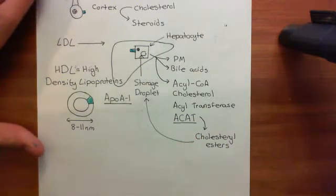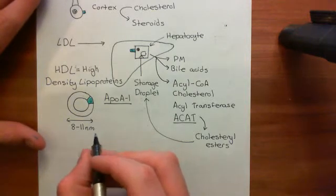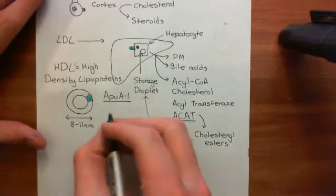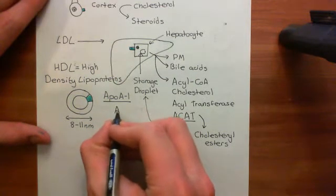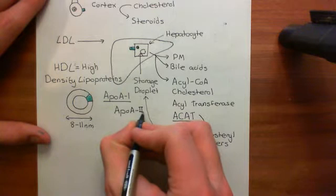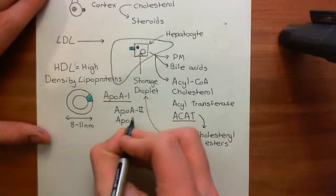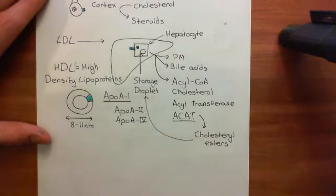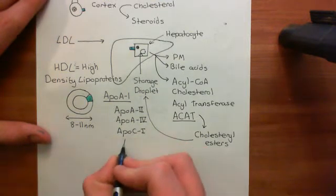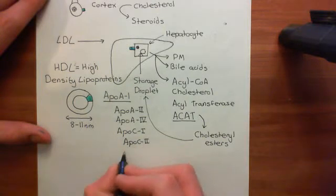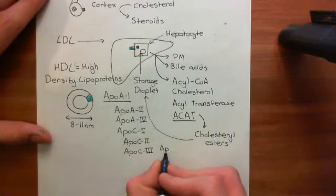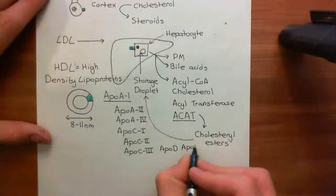However, there are a bunch of other apolipoproteins which can also be present to a lesser extent. HDL is the type of lipoprotein which can actually contain the greatest number of different apolipoproteins. Other apolipoproteins present in HDL include apolipoprotein A2 and apolipoprotein A4, then also the three apolipoprotein Cs: C1, C2, and C3, and then finally apolipoprotein D and apolipoprotein E.